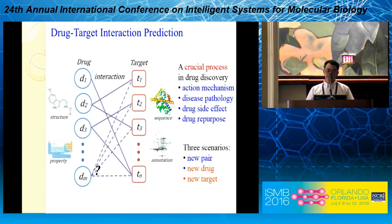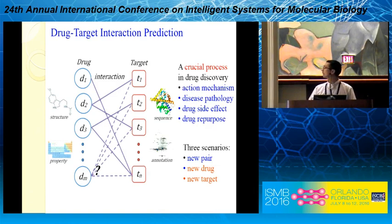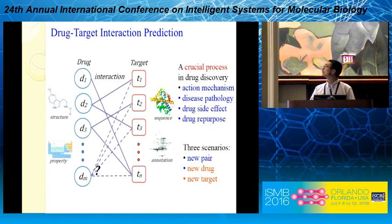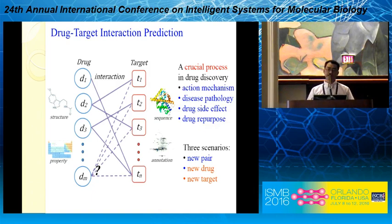This is a typical figure for predicting drug-target interaction. There are three different scenarios for drug-target interaction prediction. For example, the new pair problem: we have known drugs and known targets, but we don't know if there are some new interactions between drugs and targets. There are also two other scenarios — there may be new drugs or new targets. For example, given a new drug, we want to predict the interaction between it and already existing targets.